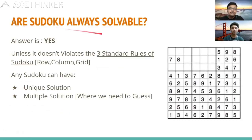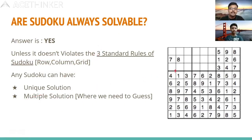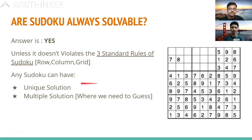Are Sudokus always solvable? Any Sudoku can be solved — we cannot always say it has a unique solution, but we can find solutions where each row, column, and subgrid has different non-repeating numbers from 1 to 9. A Sudoku may have more than one solution depending on the choices made for individual digits.